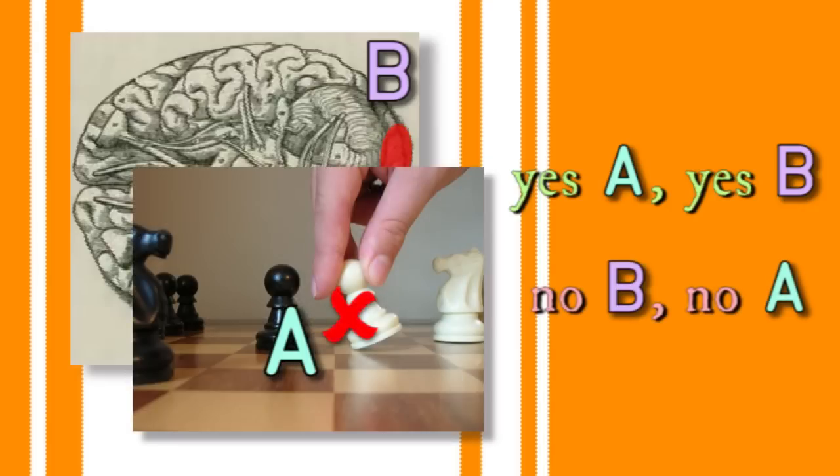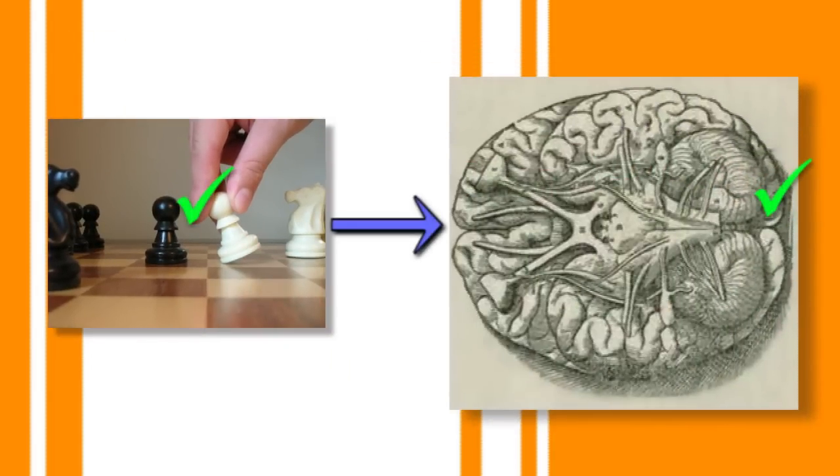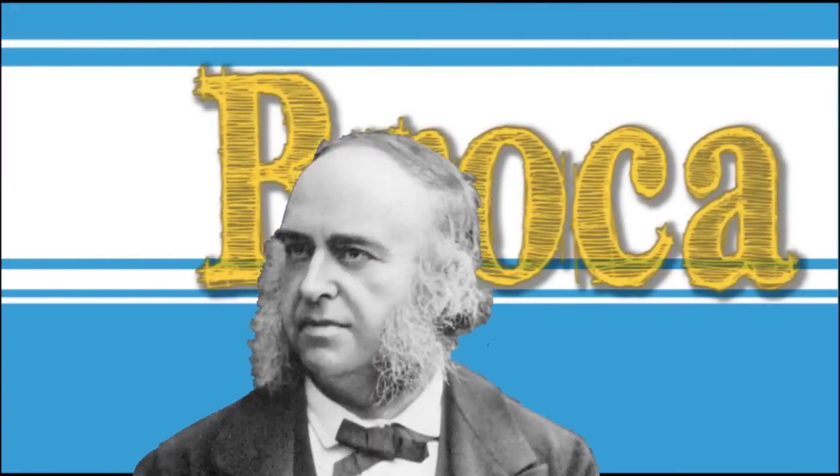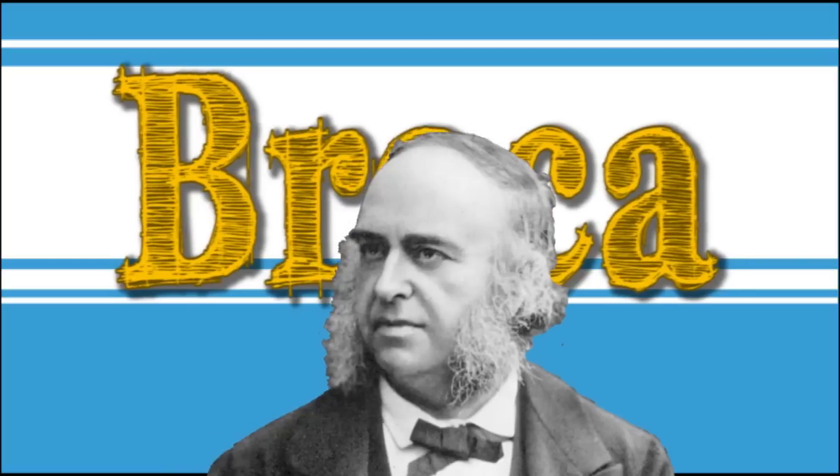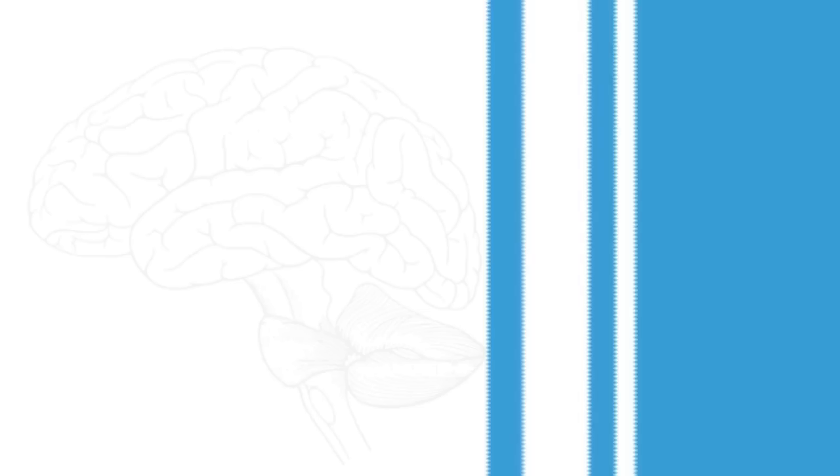In 1861, a French surgeon named Broca began to study the brains of aphasiacs and hunted down just such a region, apparently crucial for speech production, a region we today call Broca's area.